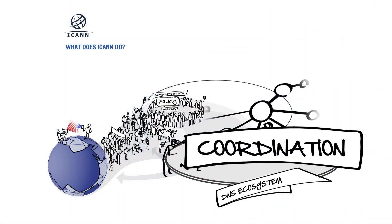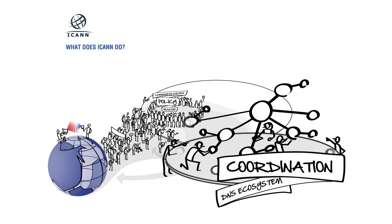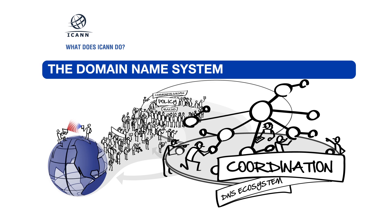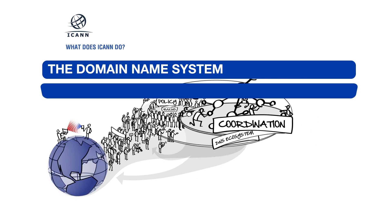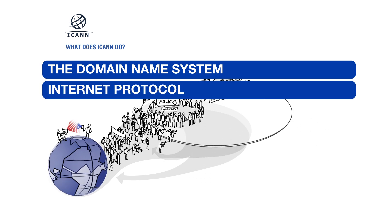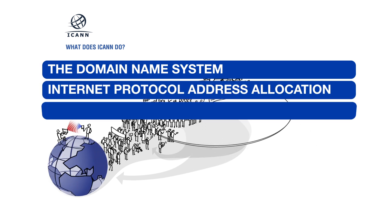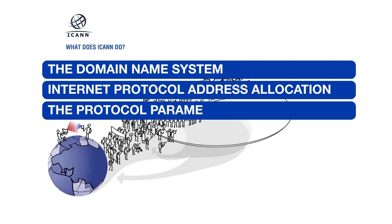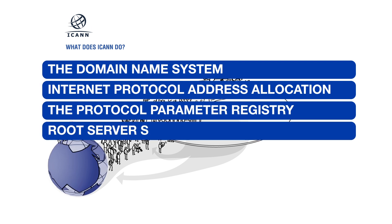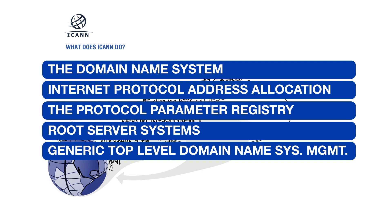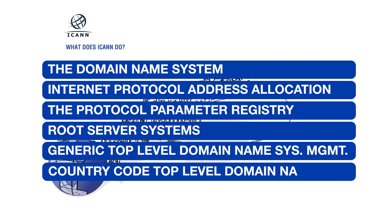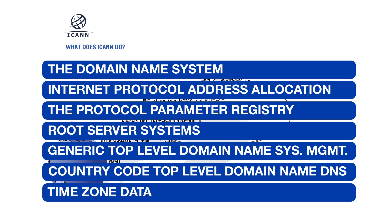Which functions does ICANN coordinate? The Domain Name System, Internet Protocol Address Allocation, the Protocol Parameter Registry, Root Server Systems, Generic Top-Level Domain Name System Management, Country Code Top-Level Domain Name DNS, and Time Zone Database Management.